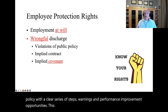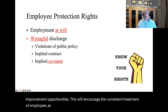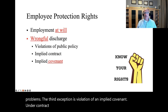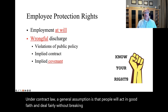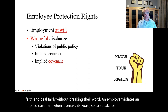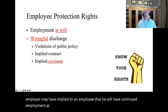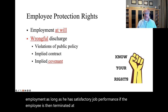This will encourage the consistent treatment of employees as well as the documentation of employee performance problems. The third exception is violation of an implied covenant. Under contract law, a general assumption is that people will act in good faith and deal fairly without breaking their word. An employer violates an implied covenant when it breaks its word. For example, an employer may have implied to an employee that he will have continued employment as long as he has satisfactory job performance. If the employee is then terminated at will, meaning for no good reason, then an implied covenant has been broken.